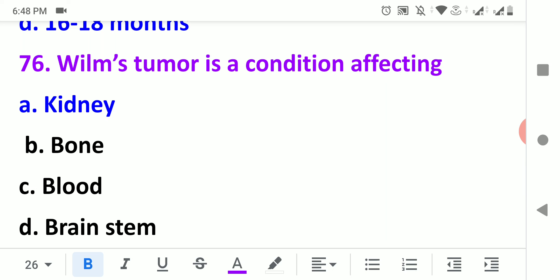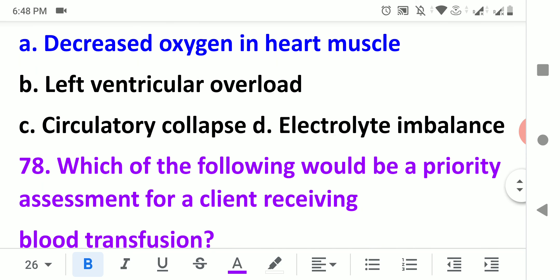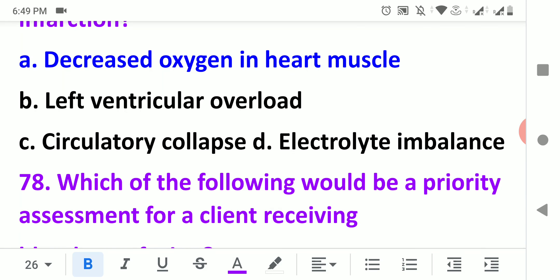Wilms tumor is a condition affecting the kidney. It's a kidney tumor. Which of the following is the reason for chest pain associated with myocardial infarction? It is decreased oxygen in the heart muscle.